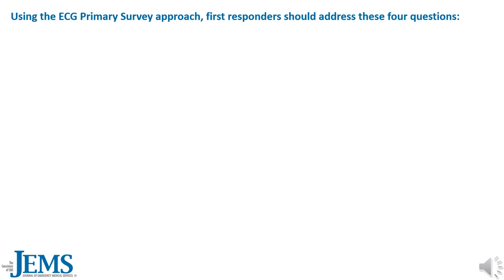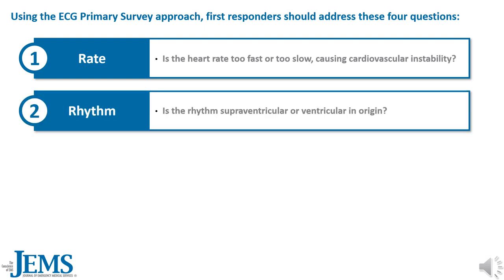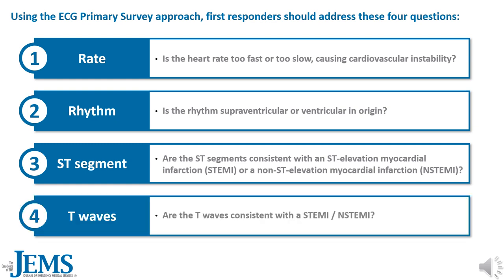We use the ECG primary approach to quickly identify possibly life-threatening emergencies. In this approach, we seek to answer these four questions: 1. Is the heart rate too fast or too slow, causing cardiovascular instability? 2. Is the rhythm supraventricular or ventricular in origin? 3. Are the ST segments consistent with STEMI or NSTEMI? And 4. Are the T waves consistent with a STEMI or an NSTEMI?